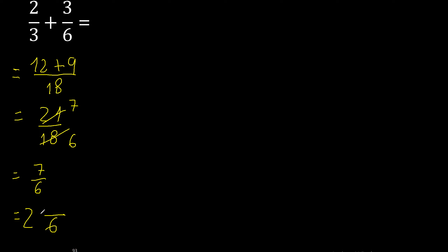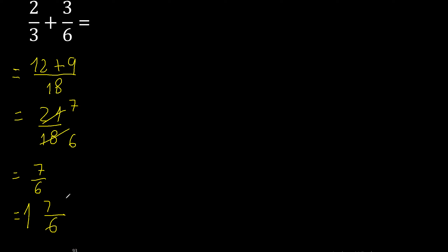Therefore another number — 1. 6 x 1 is 6. 6 is less. Perfect: 7 minus 6 x 1 is 6, 7 minus 6 is 1. Finish!